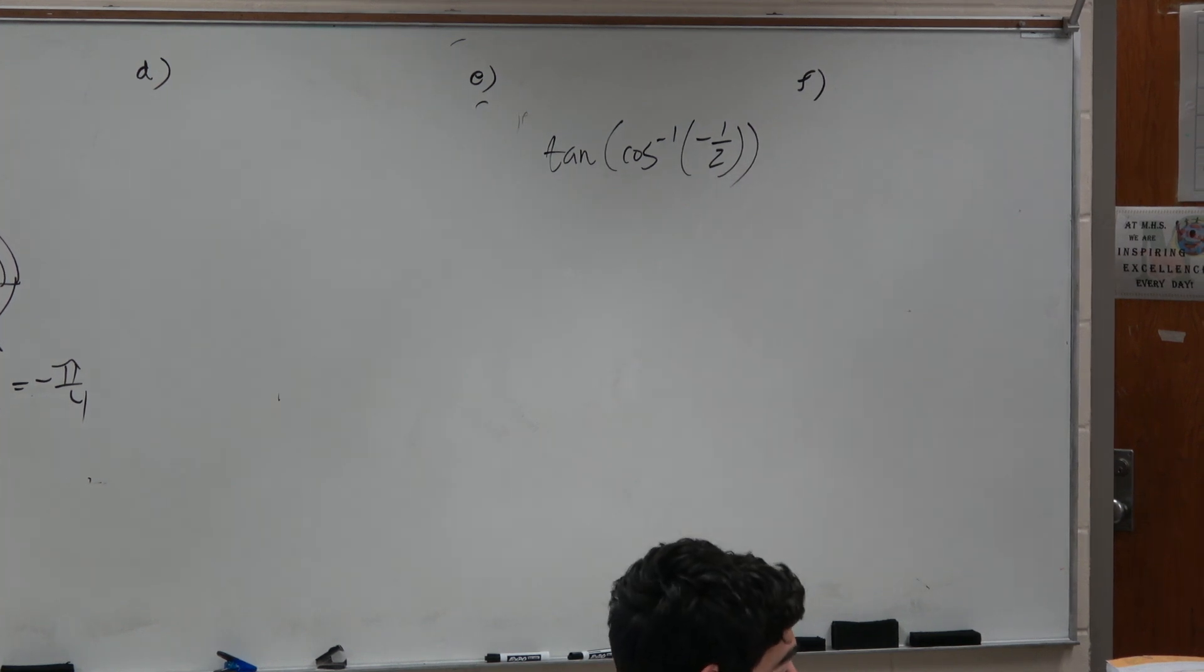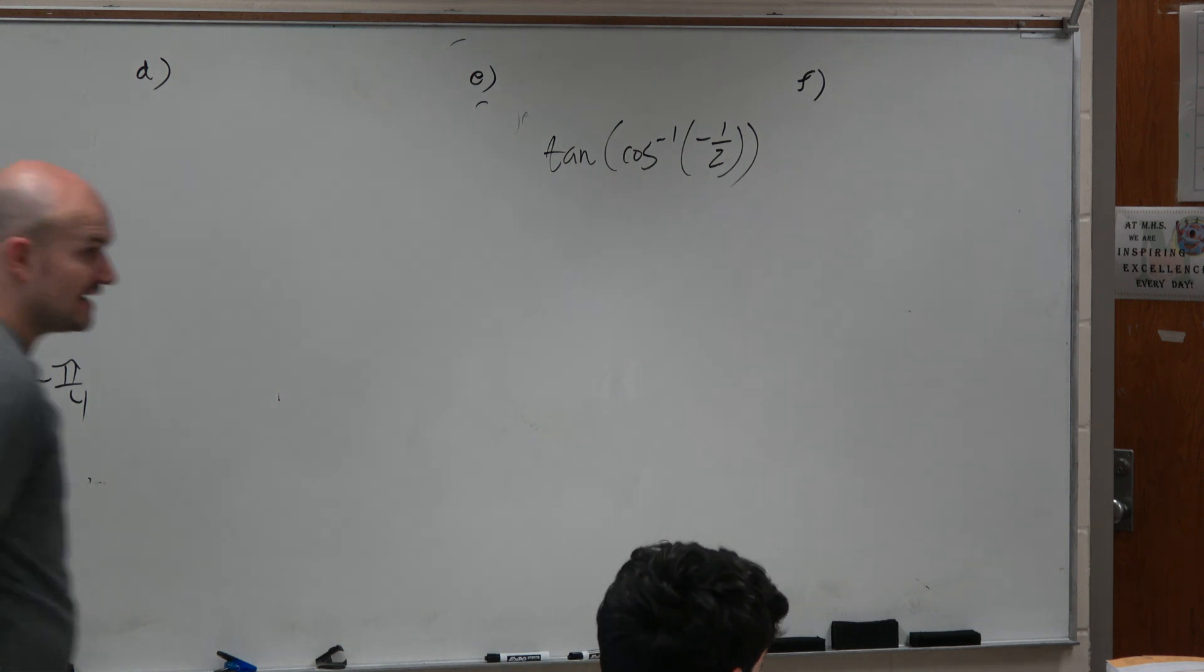All right. So we have cosine inverse of negative 1 half. So now we're going to be able to figure out what is the cosine inverse of negative 1 half?